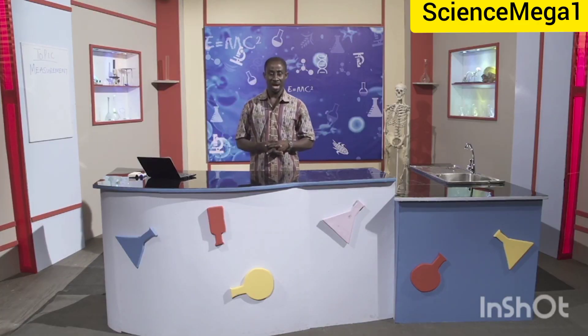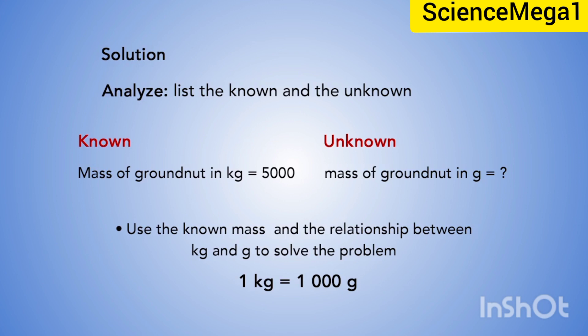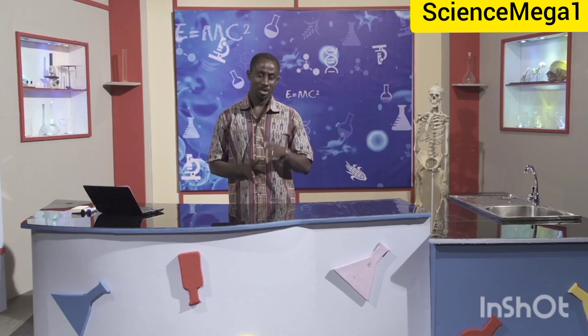Now let's look at the interconversion of units of mass. The total mass of groundnuts harvested from the agricultural science school farm of Donkokrum is 5,000 kilograms. What is the mass in grams? Going by the known and unknown approach, the stated quantity is 5,000 kilograms and the unknown is the equivalent in grams. One kilogram is equal to 1,000 grams, so 5,000 kilograms multiplied by 1,000 grams divided by one kilogram equals 5,000,000 grams — that is 5 million grams.